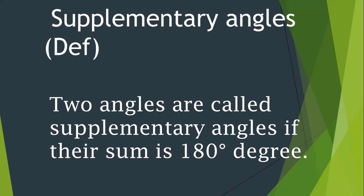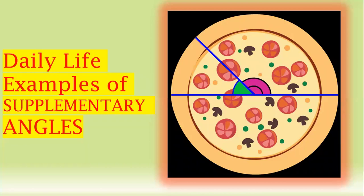Now let's look at examples of supplementary angles in daily life. Here you can see a pizza. It is an 8-slice pizza, and these three parts of the pizza show some angle, while this one slice also shows some angle. When we add these two angles, it represents a half of the pizza, represented by a straight line. We know that one straight line always forms an angle of 180 degrees.